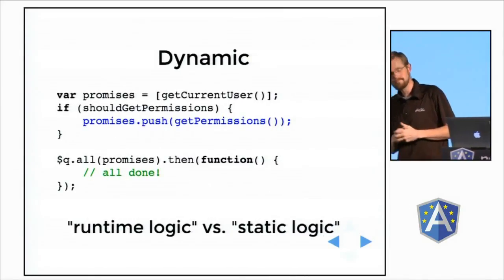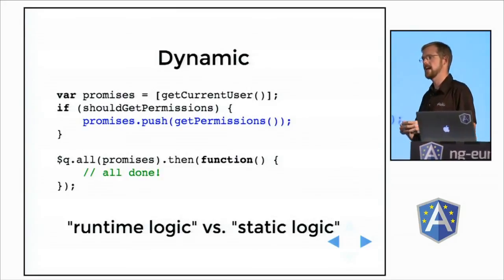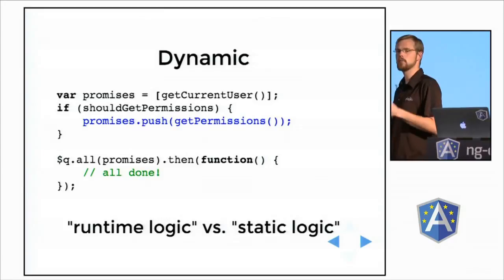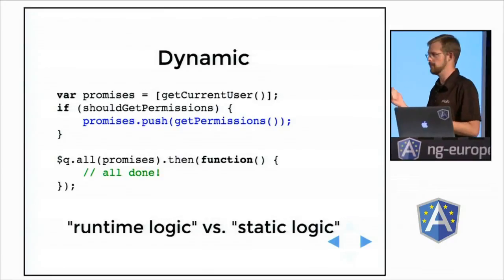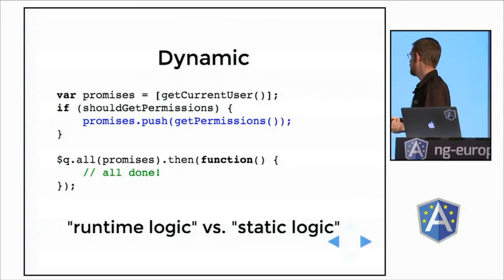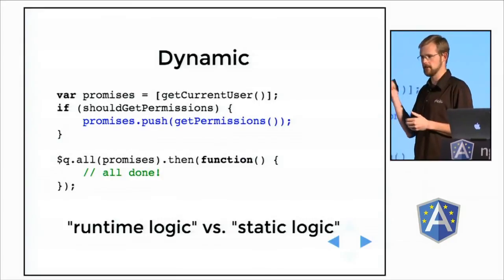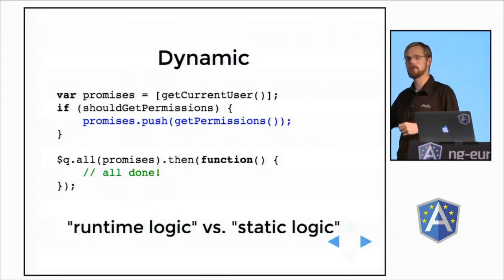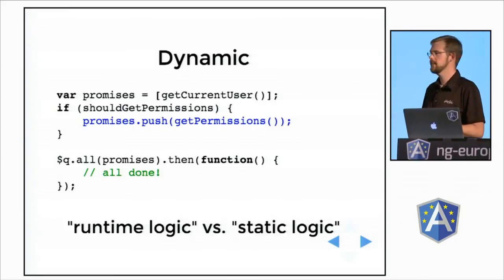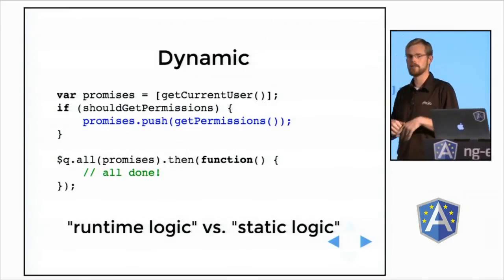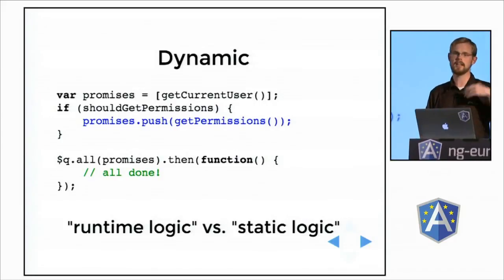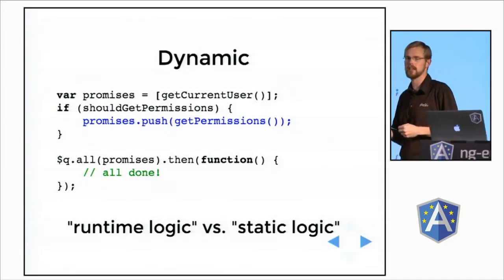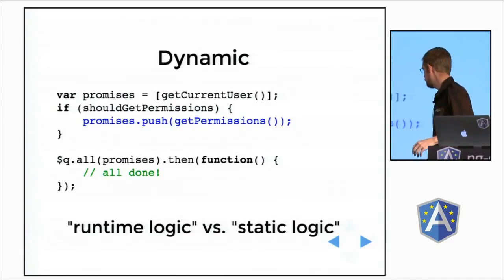Promises are dynamic. Because we are not making decisions at code authorship time, we can do concurrent operations. At runtime, we can change which operations we're doing and still have our code look the same for dealing with the resolution. For example: I've got an asynchronous operation, getCurrentUser, but depending on some state in my application, I may or may not need to go get the user's permissions. If I need to, I push that promise onto the list. Then I can use q.all and wait for the responses — my code doesn't have to be concerned with whether I needed one or both. I like to call that runtime logic over static logic.